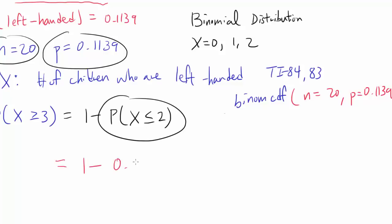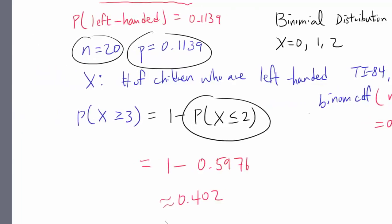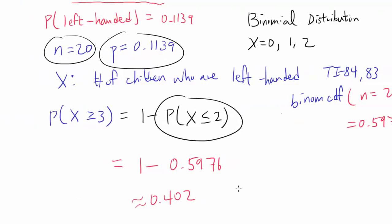So the answer is 1 minus 0.5976, which is approximately 0.402. That's the answer to Part C.